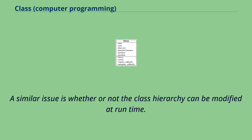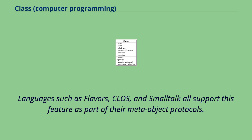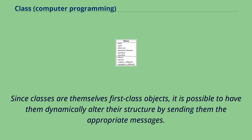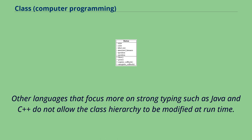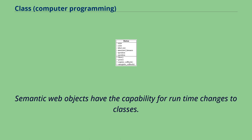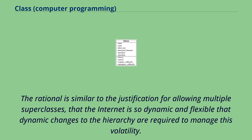However, semantic web application objects do have multiple superclasses. The volatility of the internet requires this level of flexibility, and technology standards such as the Web Ontology Language are designed to support it. A similar issue is whether the class hierarchy can be modified at runtime. Languages such as Flavors, CLOS, and Smalltalk support this feature as part of their meta-object protocols, since classes are themselves first-class objects. Other languages that focus more on strong typing such as Java and C++ do not allow the class hierarchy to be modified at runtime. Semantic web objects have the capability for runtime changes to classes, as the internet is so dynamic that such changes are required to manage its volatility.